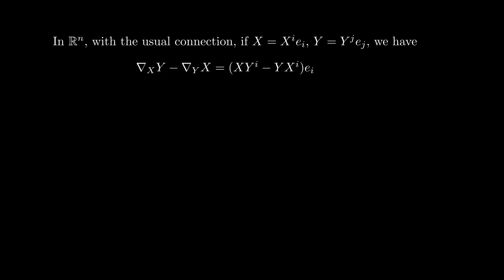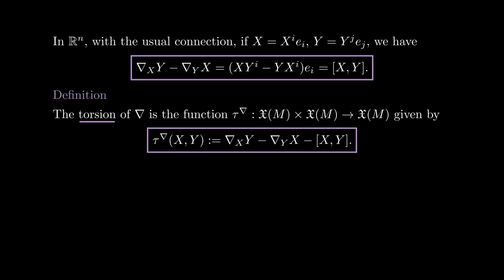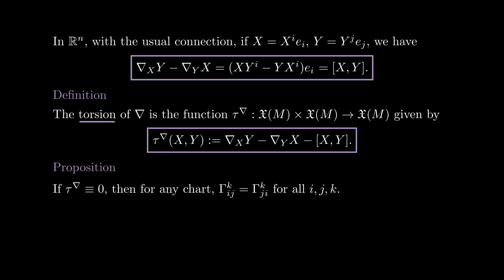So far we have only given one example of a connection — the connection on Rn where we differentiate component by component. Note that in this connection, if we take two vector fields and take the difference between Nabla_X Y and Nabla_Y X, we get an expression which happens to be the Lie bracket between X and Y. We say that a connection is torsion-free if it satisfies this property. More specifically, the torsion of a connection is the measure of how much this equality fails. For the standard connection in Rn, the torsion is zero. When a connection is torsion-free and we take local coordinates, the Christoffel symbols are symmetric in the lower indices, meaning that Gamma^k_{ij} equals Gamma^k_{ji} for any i, j, and k. This is proven by recalling that the coordinate vector fields commute and using the definition of torsion.